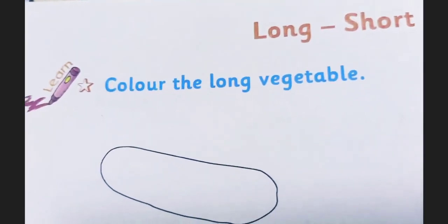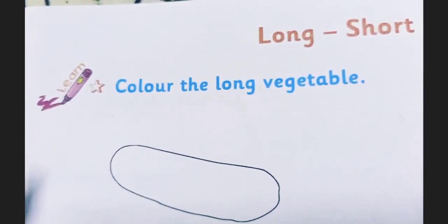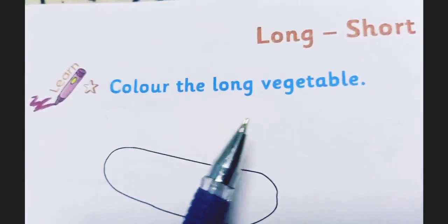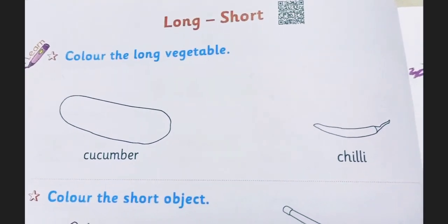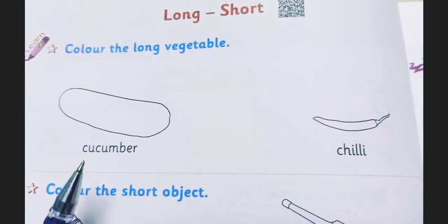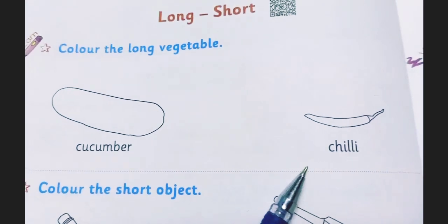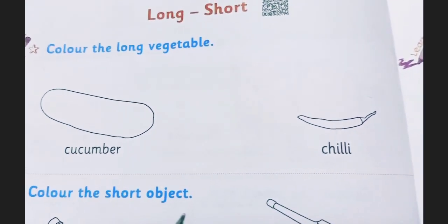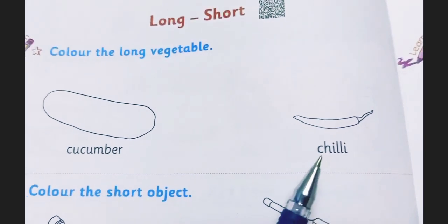Okay students, now open page number 6 and here is the question for you. Now read the first question. Color the long vegetable. Here are two vegetables. The first one is cucumber and the second one is chili. The length of cucumber is long and the length of chili is short.